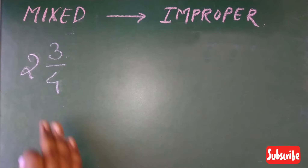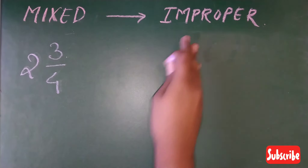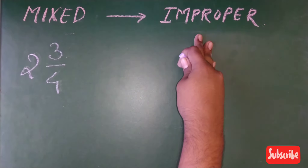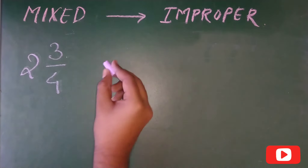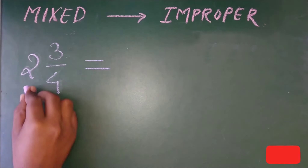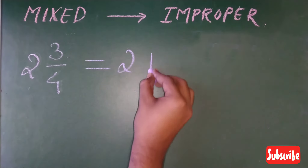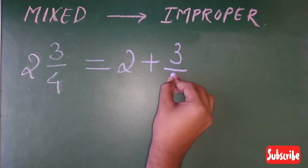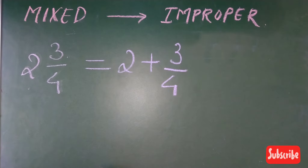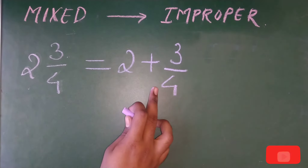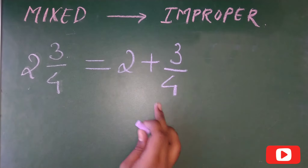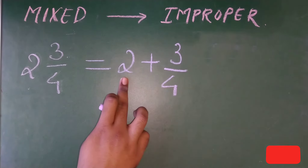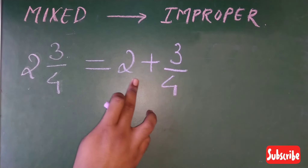Now, to convert a mixed fraction to an improper fraction — where the numerator is greater than the denominator — you need to do a multiplication. You multiply the denominator by the whole number, then add the numerator.